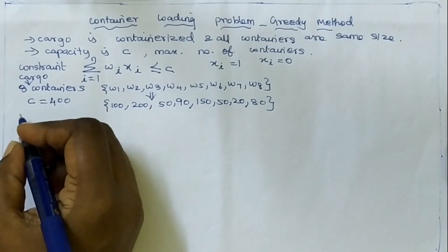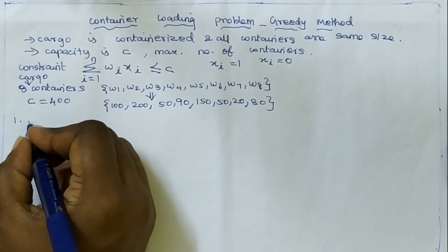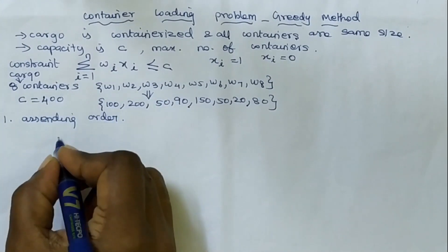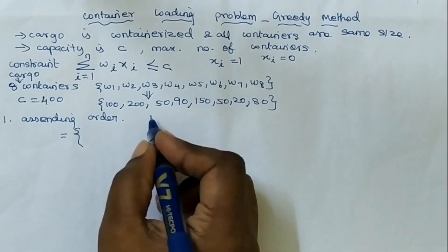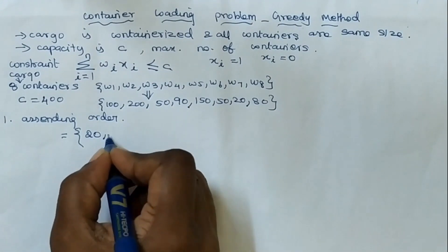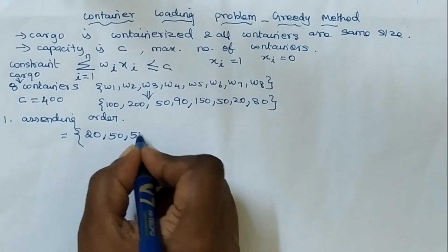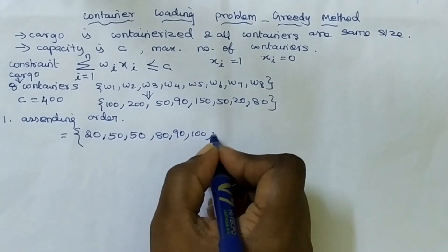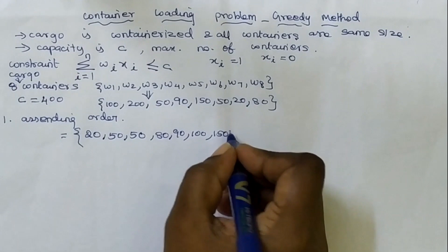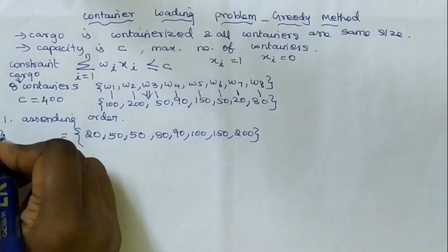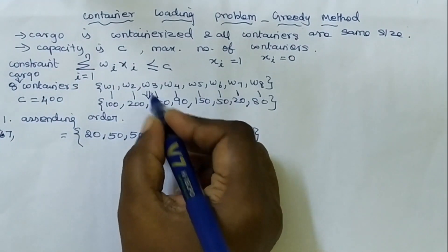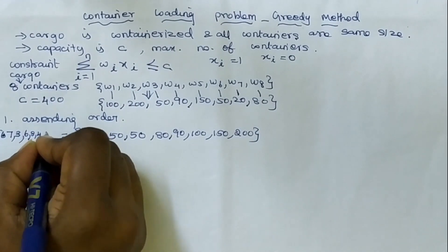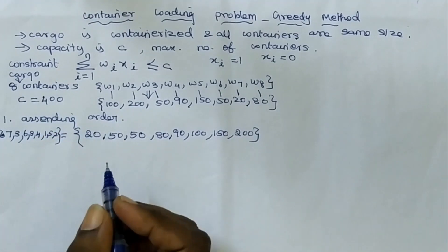The first step is to arrange the containers in ascending order of weight. Sorting the weights in ascending order gives us: 20, 50, 50, 80, 90, 100, 150, 200, corresponding to container indices 7, 3, 6, 8, 4, 1, 5, 2.